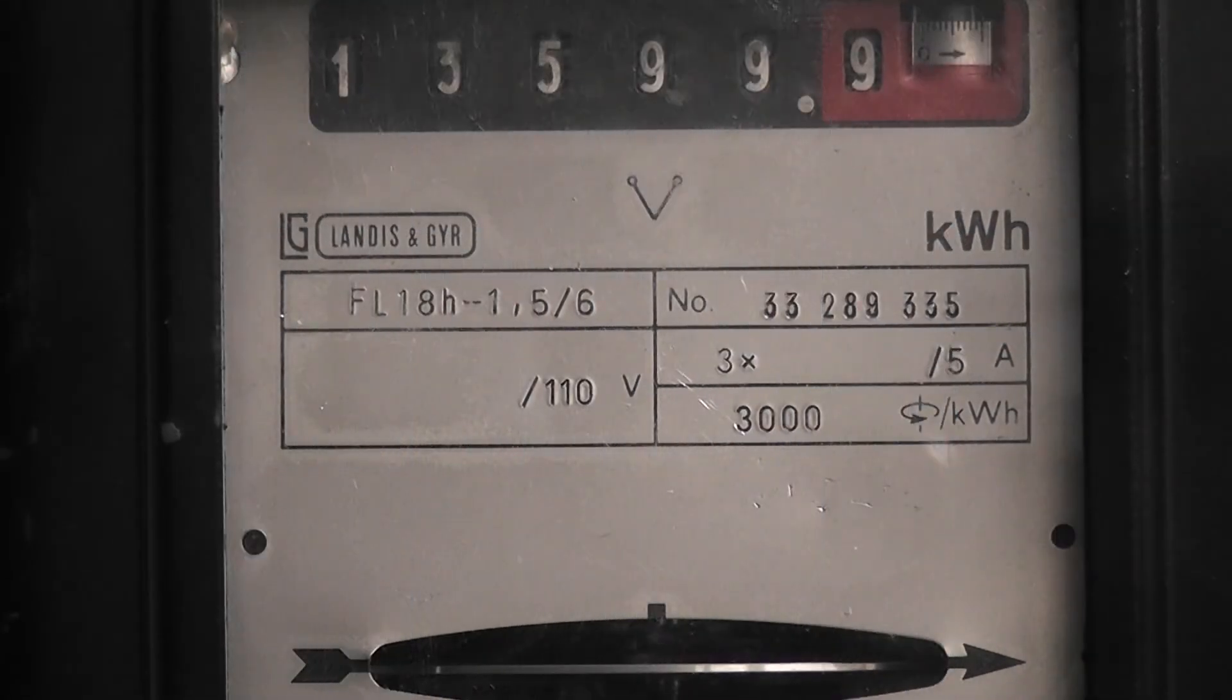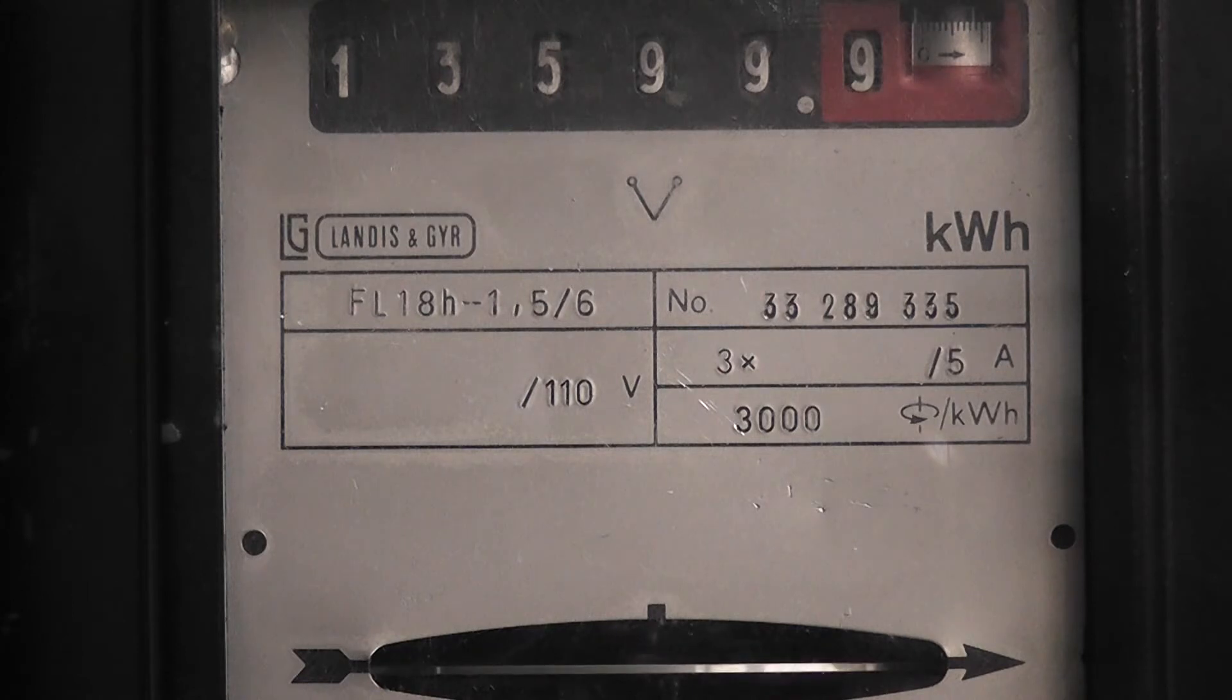The meter is just about to roll over from 13599.9 to 13600.0. We'll take 300 revolutions off the disc, so it's a slow process.